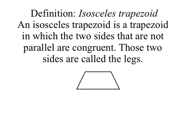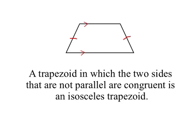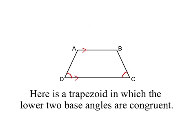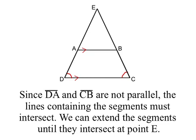Now let's look at isosceles trapezoids. A trapezoid is a quadrilateral with exactly one pair of parallel sides, and an isosceles trapezoid is a trapezoid in which the two non-parallel sides — the legs — are congruent. We have the reverse of the definition: a trapezoid in which the two non-parallel sides are congruent is isosceles. But now we're given a trapezoid in which the lower two base angles are congruent, and we're going to prove that if the lower base angles are congruent then the two legs must be congruent. Since the legs are not parallel they must intersect, so we extend those two sides to meet at point E.